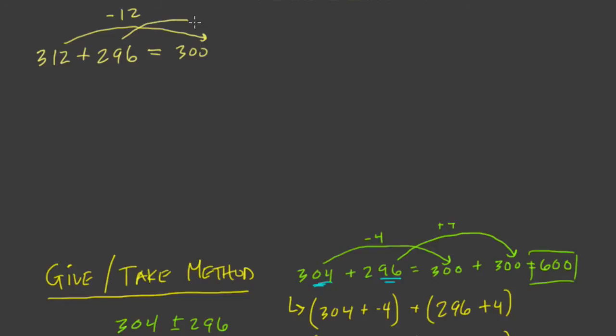For 312, I would take 12 away to get 300. And for 296, the idea would be to add 12. You could add 4 to get 300, but then you have to keep track of the difference between how much you added and subtracted, which is fine. But here I'm going to subtract and take away the same amounts. So this gives me 300 plus 308, which is 608. And that makes sense. It's eight more than we had before. So it's 608.